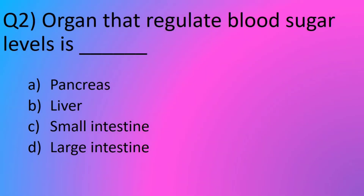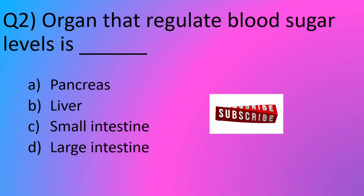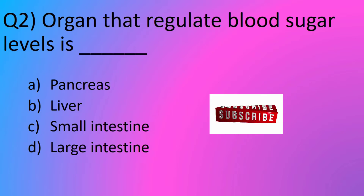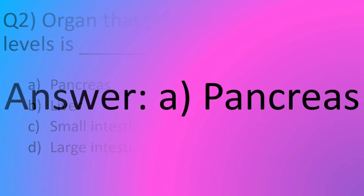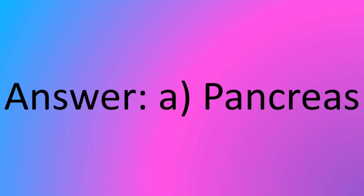Question No. 2: Organ that regulates blood sugar level is dash. Option A: Pancreas. Option B: Lever. Option C: Small Intestine. Option D: Large Intestine. The answer is Option A: Pancreas.